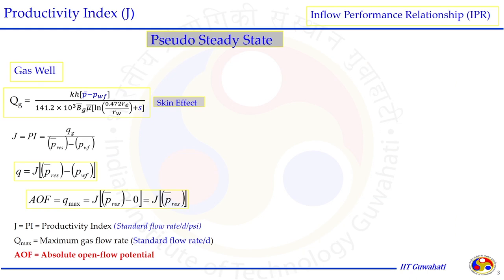Let us quickly compare the gas well with the oil well in terms of the productivity index. The IPR equation for the pseudo steady state condition for the gas well can be represented by an equation derived from fundamental understanding, including the skin effect. The productivity index J is a parameter that characterizes the performance of a well — gas or oil — applicable only when flow occurs under pseudo steady state condition and the non-Darcy factor is not included.